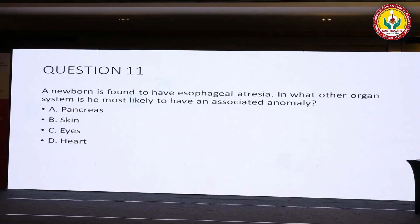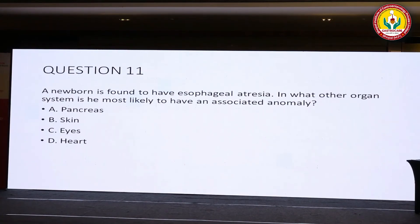Question 11: a newborn is found to have esophageal atresia — in which other organ system is an associated anomaly most likely to be found? Option A: VACTERL/vertebral. Option B: skin. Option C: eye. Option D: eye.